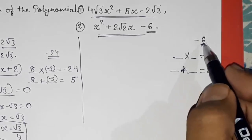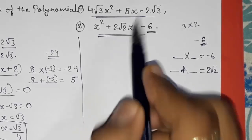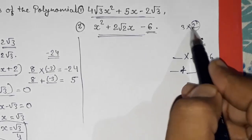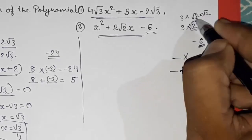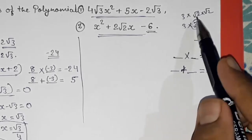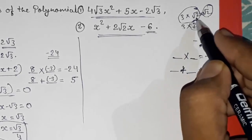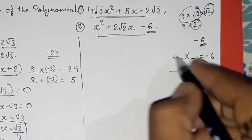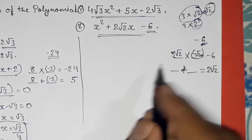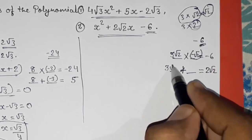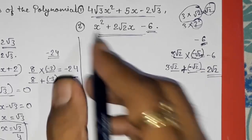We know factors of 6 are 3 and 2, but we need √2 in the result. So we find factors of √2: √2 × √2 = 2. Now we can make the pair: 3√2 and −√2. Check: 3√2 × (−√2) = −6, and 3√2 + (−√2) = 2√2. Yes, that gives us the correct middle term.